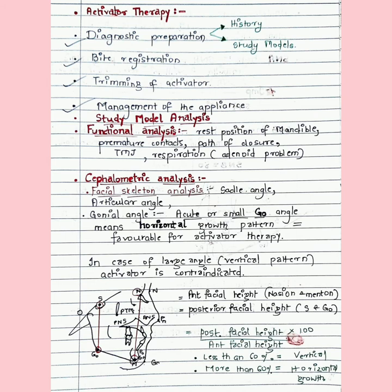If there is premature contact in the posterior region, there will be open bite in the anterior region or even crossbites. We also check the TMJ to ensure the patient doesn't have any TMJ abnormalities. We also assess respiration — whether the patient has any adenoid problems — since the activator is a bulky appliance and cannot be given to patients with respiratory problems, as it will worsen them.